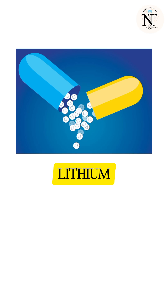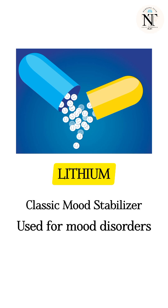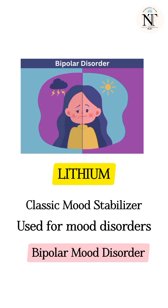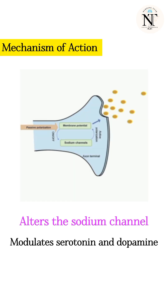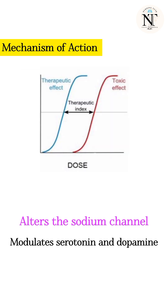Let's talk about lithium. Lithium is a classic mood stabilizer used for mood disorders, especially bipolar mood disorder. It alters the sodium transport in the neuron and modulates neurotransmitters like serotonin and dopamine.